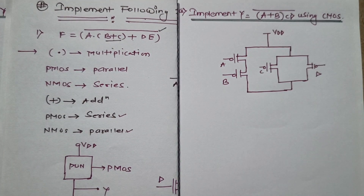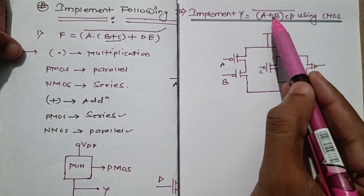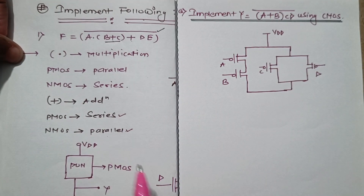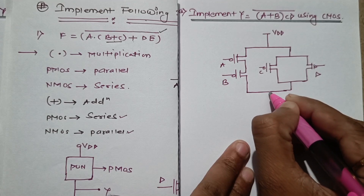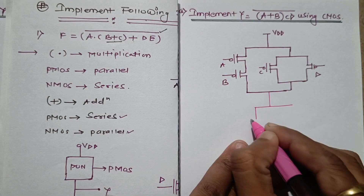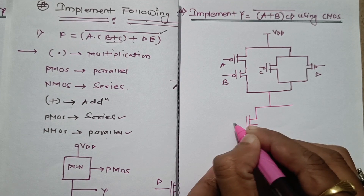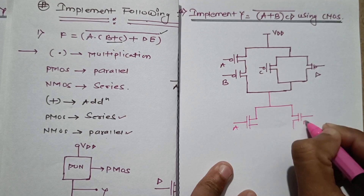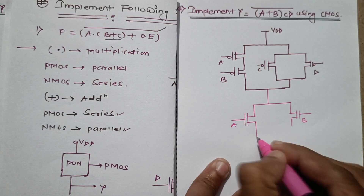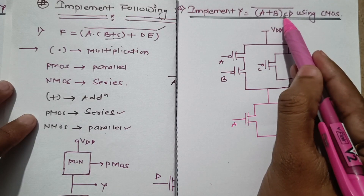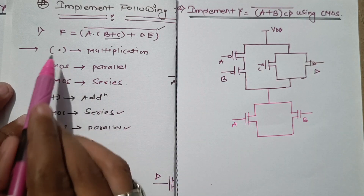Now the reverse part — implementation using NMOS. Starting with the plus sign: for plus, NMOS should be in parallel, so A and B are in parallel with each other. We draw an NMOS with input A and an NMOS with input B — these two are in parallel.